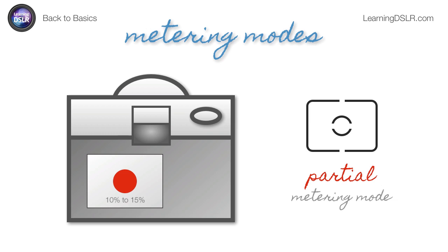Partial metering mode is similar to center-weighted, but it no longer really looks at the background. Instead, it takes a 10 to 15 percent circle right in the center and evaluates that exclusively — just the center area, a good chunk of it — and looks for middle gray only in that circle.